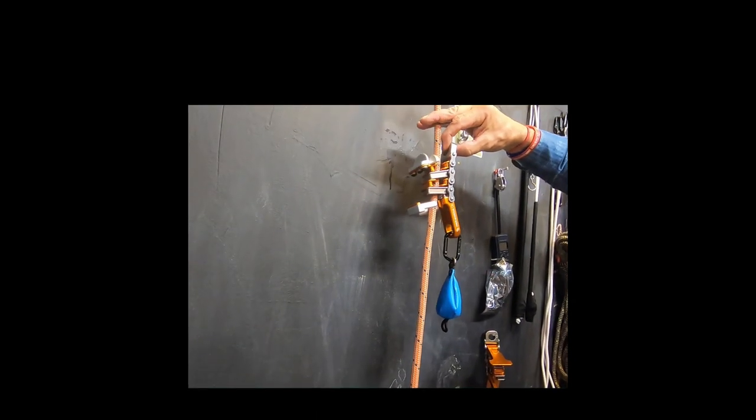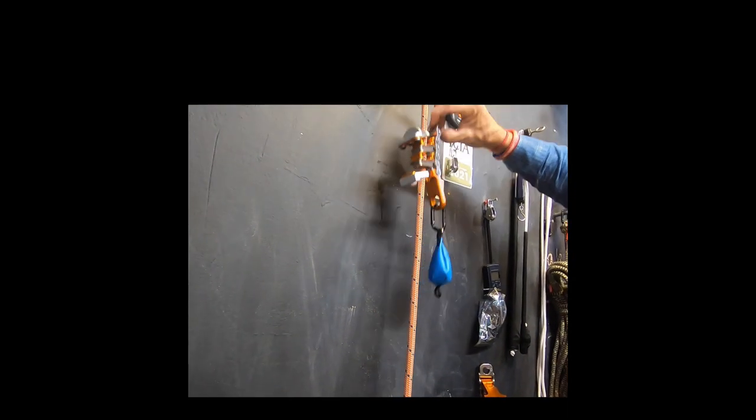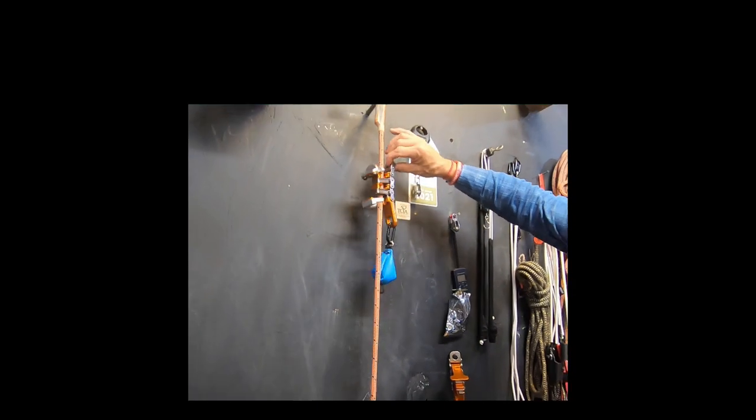When you have any weight on this L bracket, it puts it in the proper position. When you're going up and say your foot ascender comes off or the limb you're standing on disappears, it doesn't make any difference, it'll just capture you going up the rope.